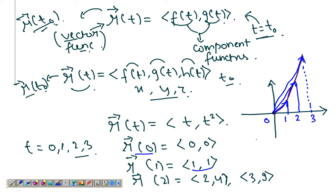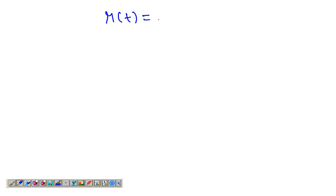Those are the very basics of vector functions. Let's take another example: r(t) = <t, 1>. One of the component functions is actually a constant function — the second component is always 1. We follow the same procedure and take values of t starting at zero.